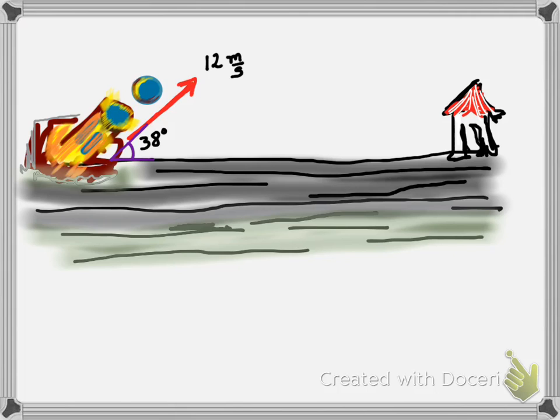We know that we have already the angle, 38 degrees, and we are looking for the horizontal component. Let me change the color so we can see it. Let's make it orange. Horizontal component of this velocity.